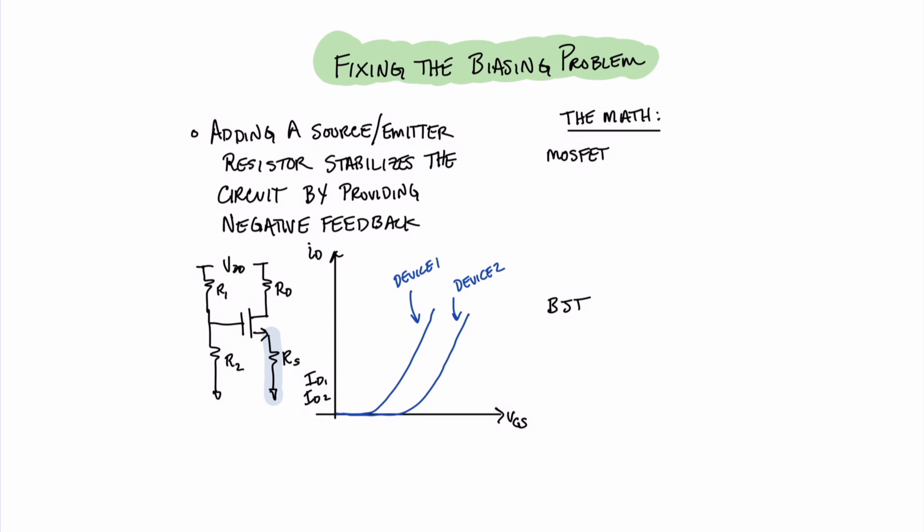You have to add a source resistance in the case of a MOSFET circuit, or an emitter resistor in the case of a BJT circuit. What effect this has, though, is unclear at this point. Let's take a look at this circuit with the source resistance. And let's do some math to understand how the drain resistance is improved by the addition of the source resistor. Let's write an equation for the voltage here at the gate. We can see that the gate voltage will be whatever the value of VGS is, plus the value of the drop across the source resistor.